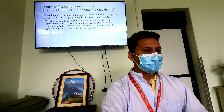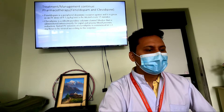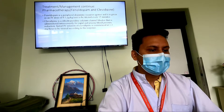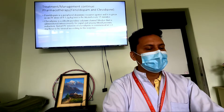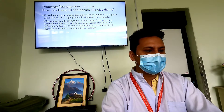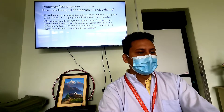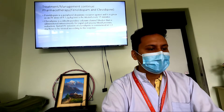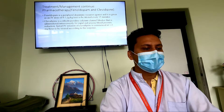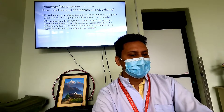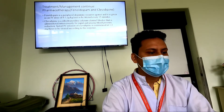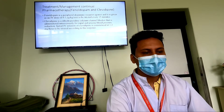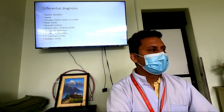Fenoldopam is a peripheral dopamine receptor agonist given at an IV dose of 0.1 microgram per kg per minute, titrated every 15 minutes. Clevidipine is a dihydropyridine calcium channel blocker administered intravenously for rapid and precise blood pressure reduction; initial IV infusion is given at 1 to 2 mg per hour and titrated according to response.